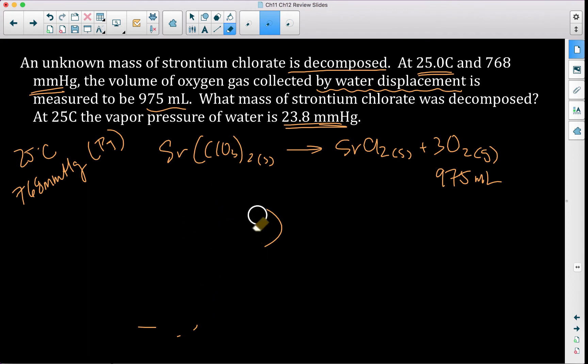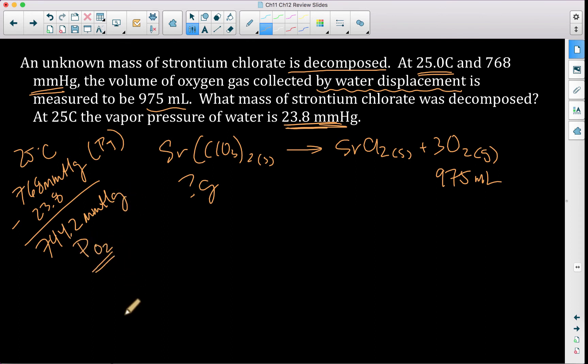So let's go ahead and finish reading the problem. What mass of strontium chloride was decomposed? So this is my question. And we're given the vapor pressure of water. So let's go ahead and subtract off my vapor pressure of water. So 23.8 is from water, which is going to give us a pressure of 744.2 millimeters of mercury. And this is the pressure of my oxygen. So now what?